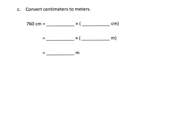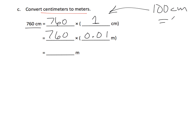Now we're doing centimeters to meters, and we have a choice of representing it as a fraction or as a decimal. 760 centimeters is 760 copies of one centimeter, which equals 760 copies of 0.01 meters, because there are 100 centimeters in one meter. Multiplying by one hundredth moves each digit two spaces to the right, making the decimal look like it moves two spaces to the left — so our answer is 7.6 meters.